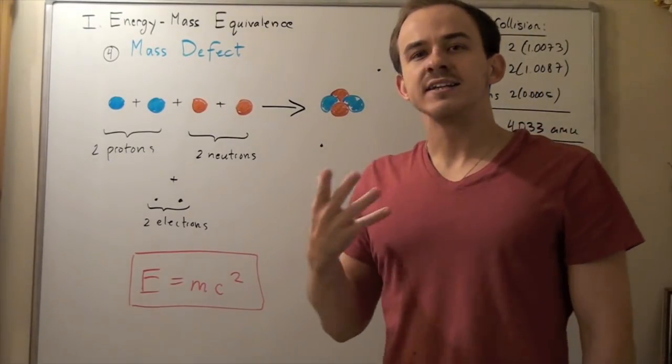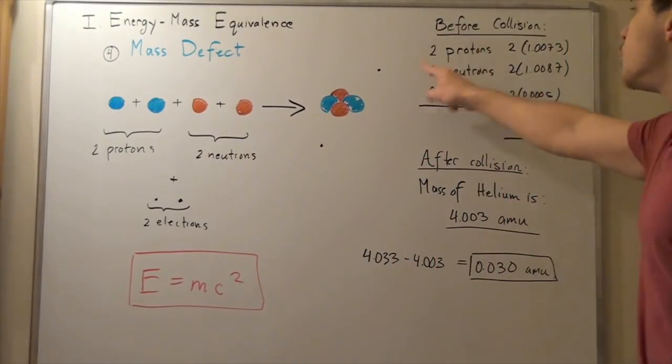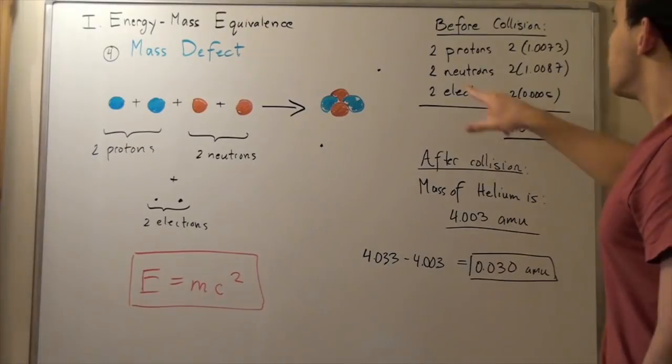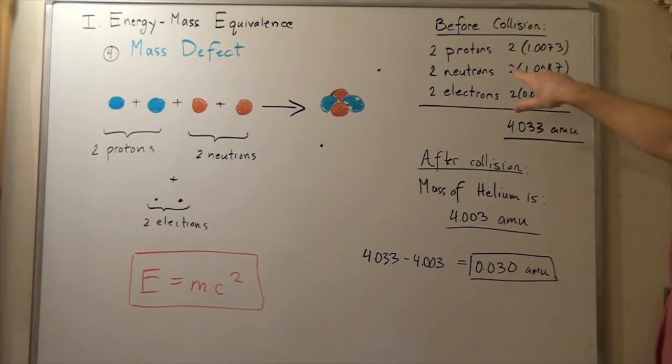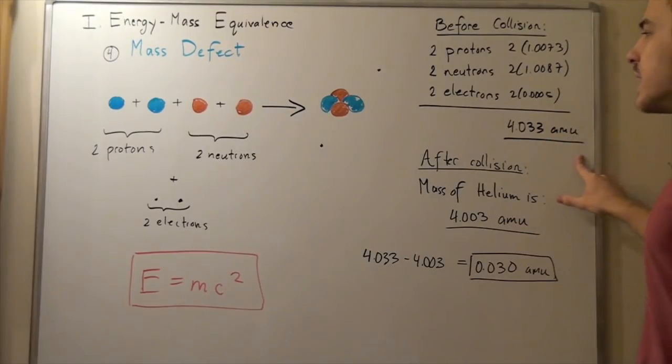Let's calculate the mass before the collisions actually take place. Two protons have a mass of 2 times 1.0073 AMU. The two neutrons have a mass of 2 times 1.0087 AMU. And the two electrons have a mass of 2 times 0.0005 AMU. We add these up, and we see that our mass, our final mass, is 4.033 AMU.